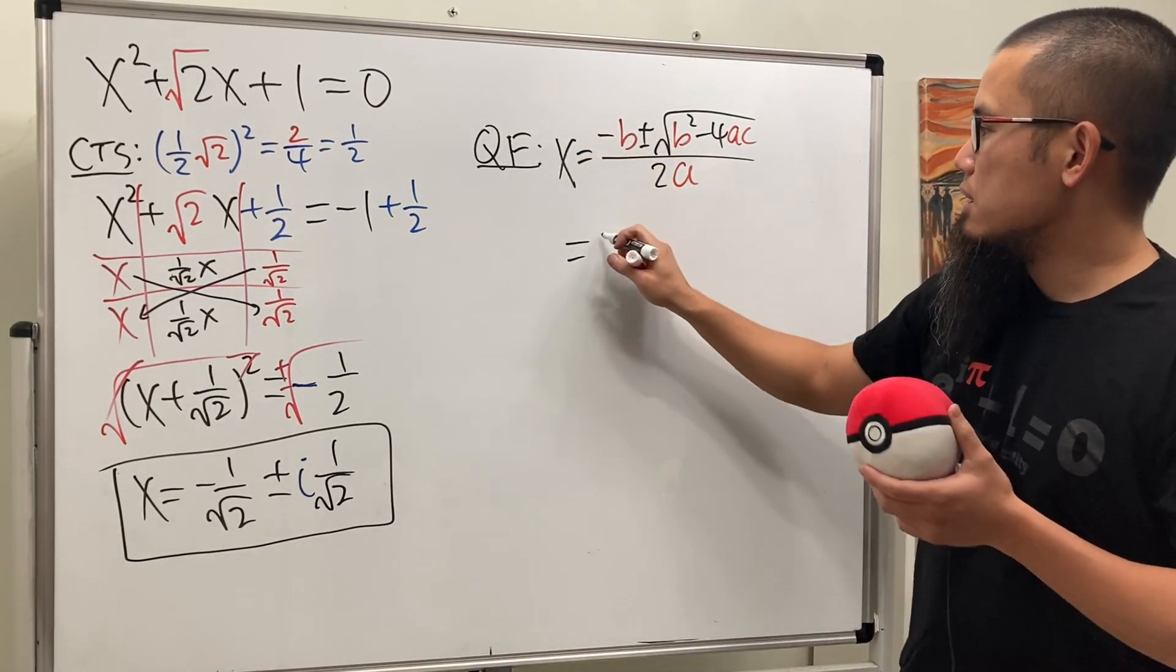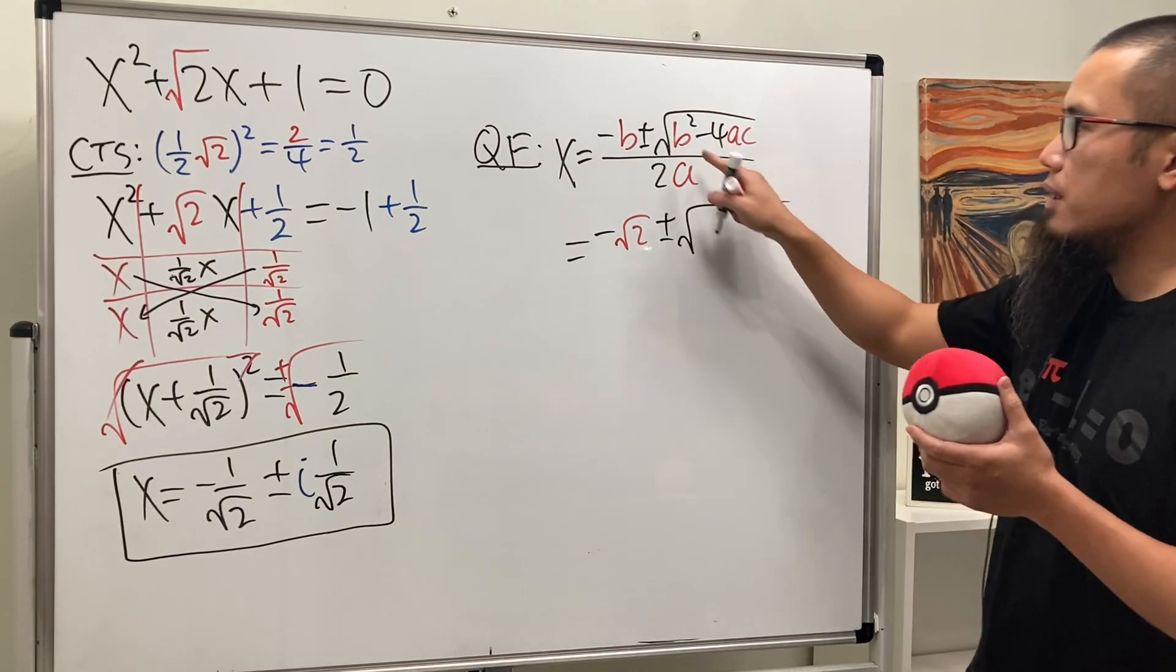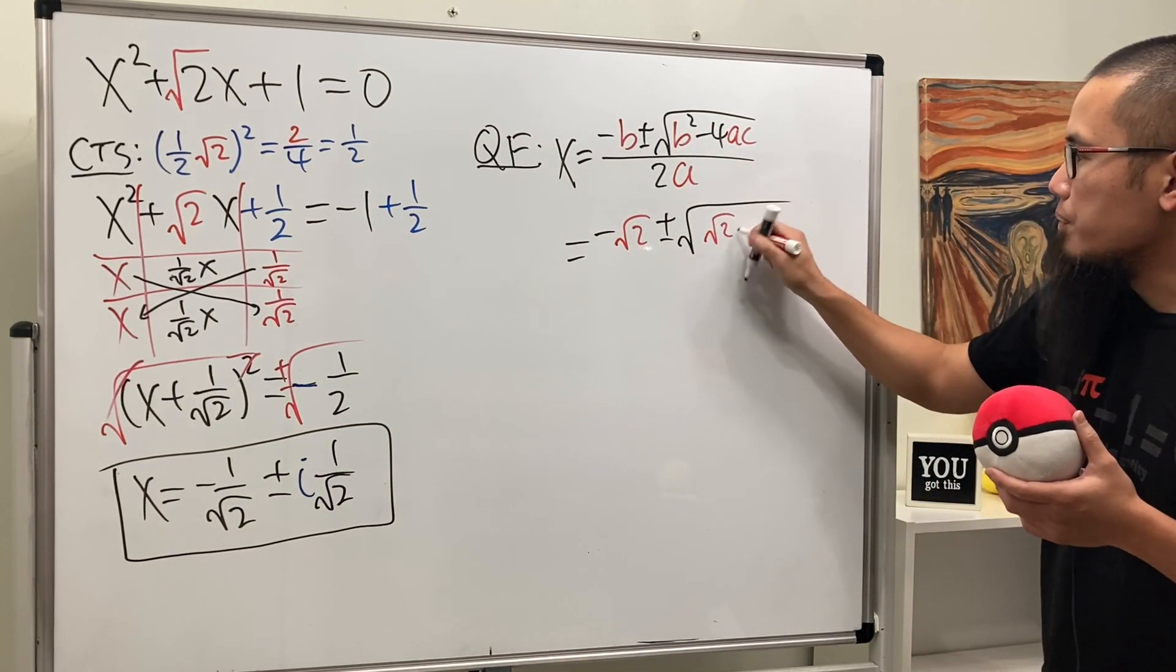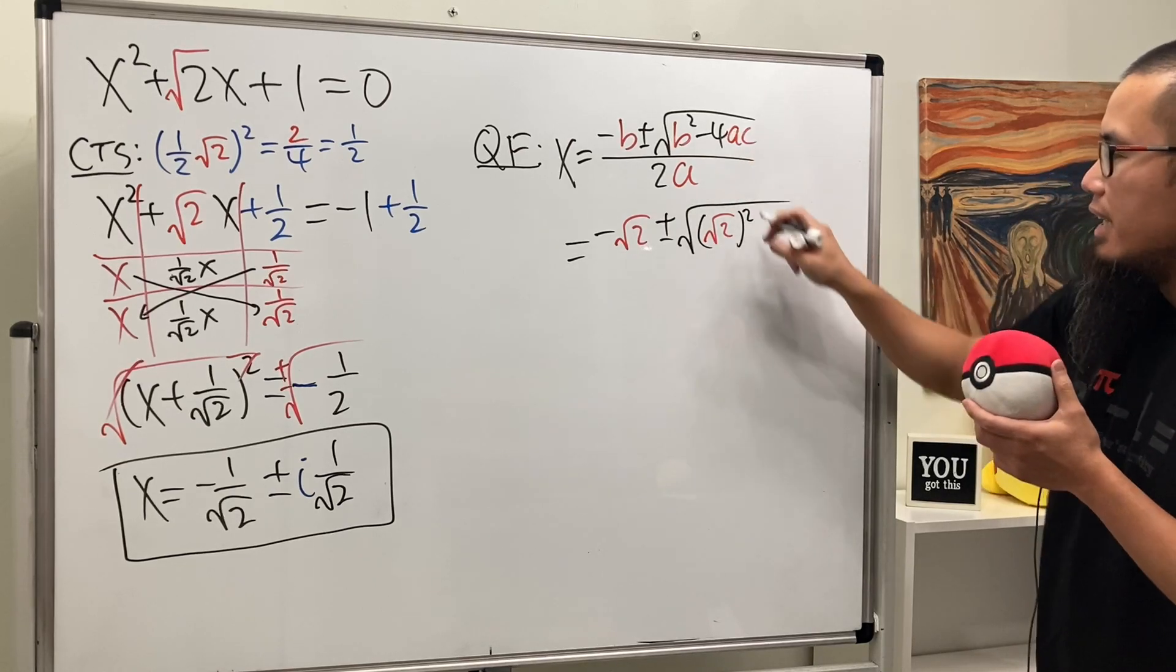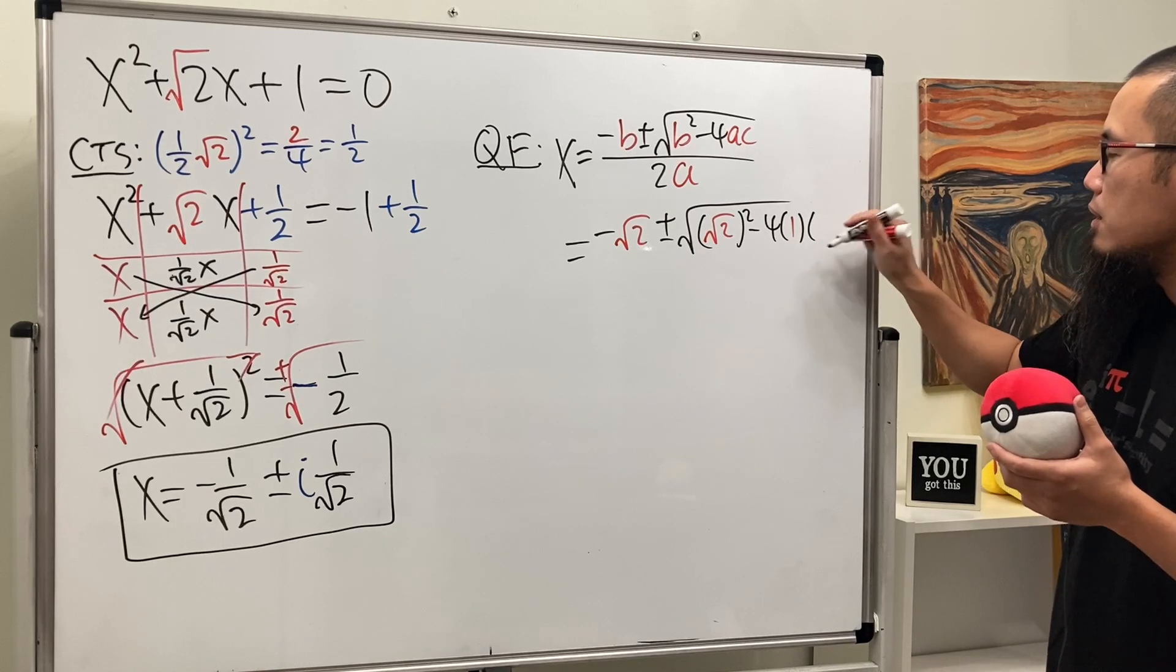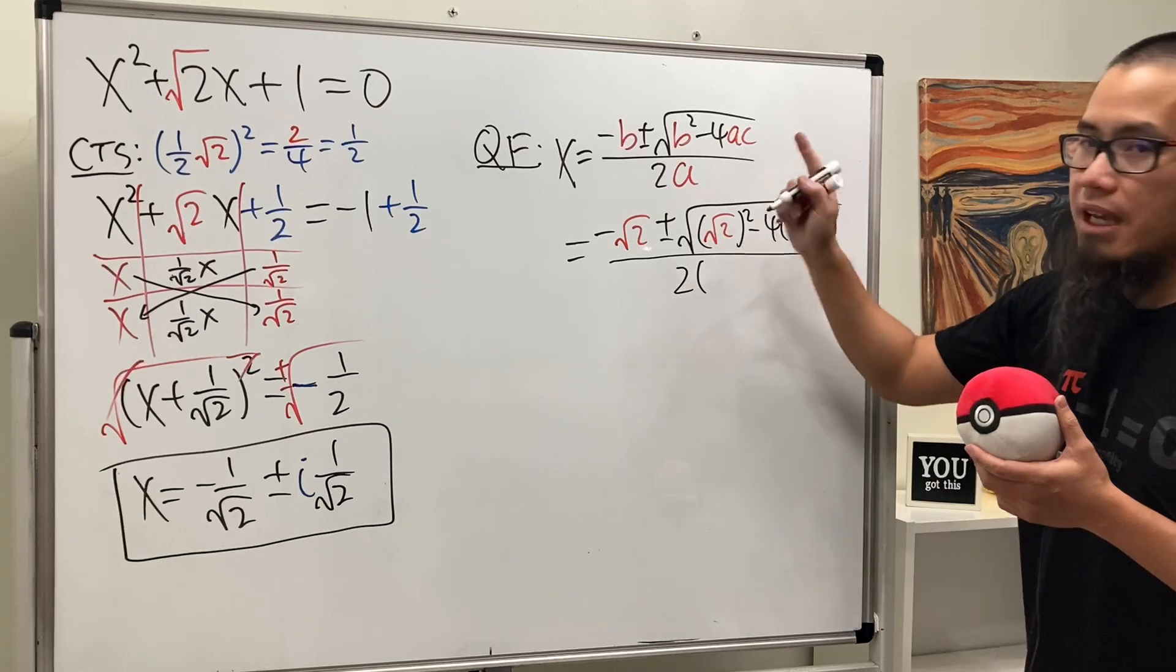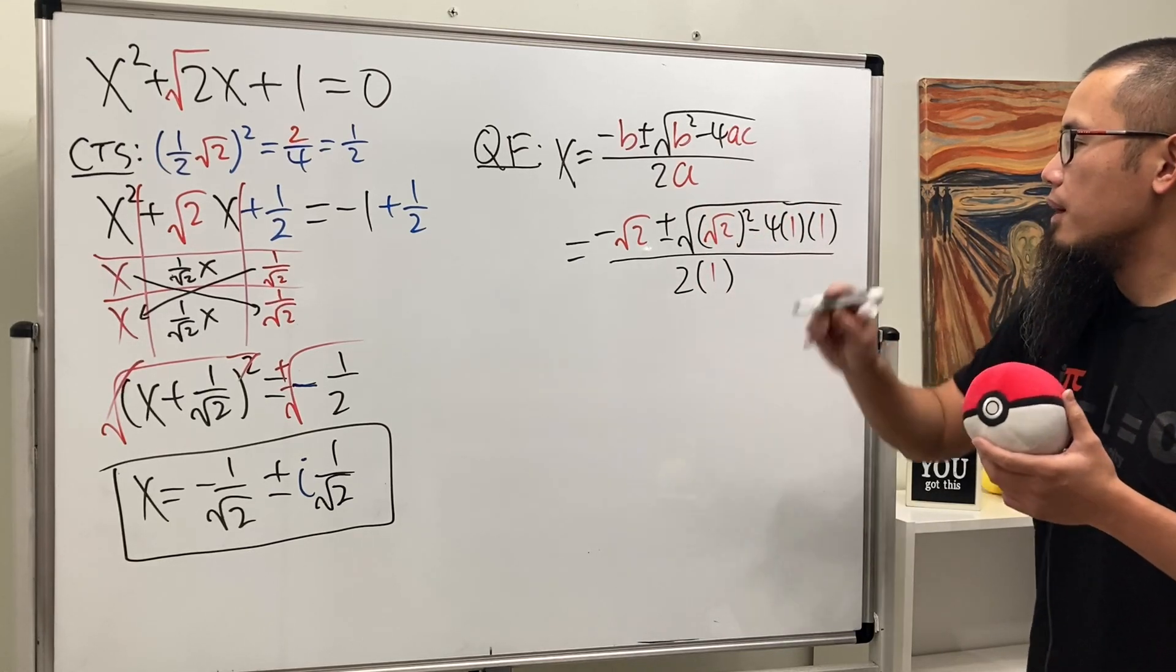So let's go ahead and just plug in. So b is square root of 2. And then we have the plus or minus square root of. Again, square root of 2 for b. But this time we square that. And then minus 4. a and c are both 1. So that's going to put that down. And then divide it by 2 times a, which is 1.